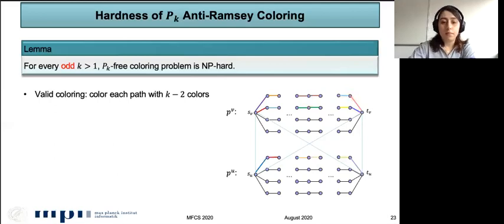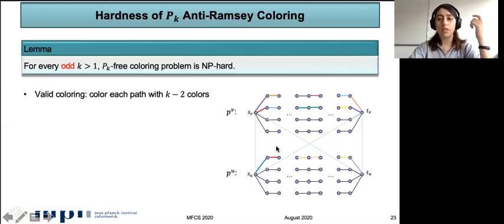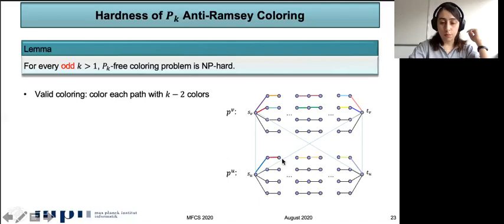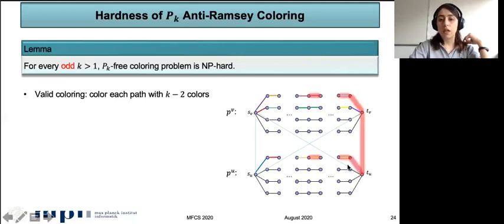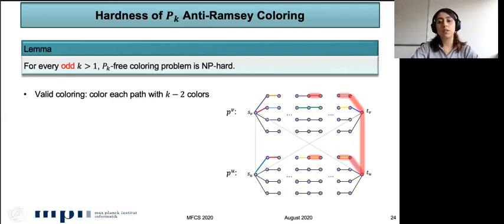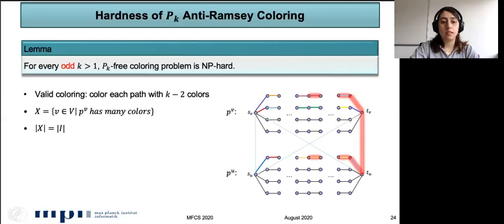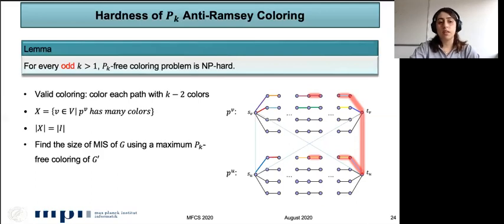If we consider each vertex gadget independently, we can color them with many colors: K−2 times the number of paths. But if two gadgets are connected, we don't have many options — coloring adjacent gadgets the same way creates a rainbow P_k. This leads us to see that the number of vertices with many colors in a maximum P_k-free coloring equals the size of the maximum independent set. We define X as the set of vertices V such that P_V has many colors in G', and prove that |X| equals the size of the maximum independent set in G. So we can find the maximum independent set size using a maximum P_k-free coloring of G'.